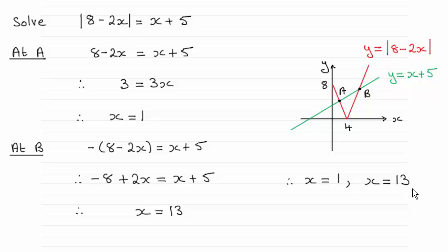The method I used was based on a graphical method. In the previous part of the question, we were asked to sketch the curve y equals the mod of 8 minus 2x. And as you can see, it looked like this kind of V-shape. And what I've done here is now superimpose the graph of y equals x plus 5 on top.